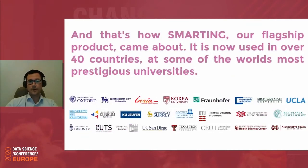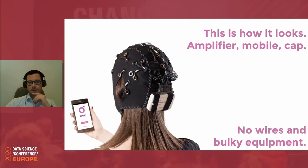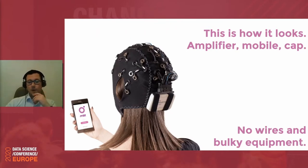That prompted us to develop our most popular product, Smartink. It is now used in over 40 countries. The system has electrodes that measure underlying potentials, with a box at the back of the head conducting sampling, digital conversion, and streaming via Bluetooth to either a mobile phone or a computer. The mobile phone can be a recording unit, or it can also provide certain feedback depending on the paradigm being investigated.